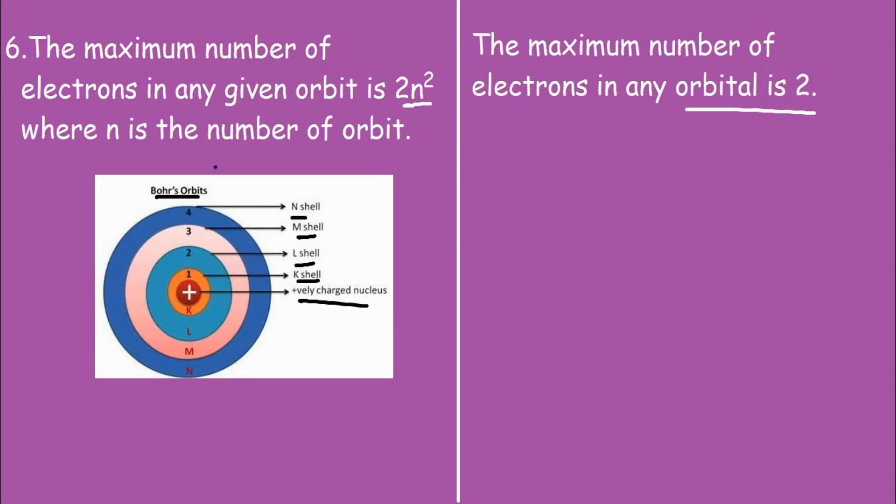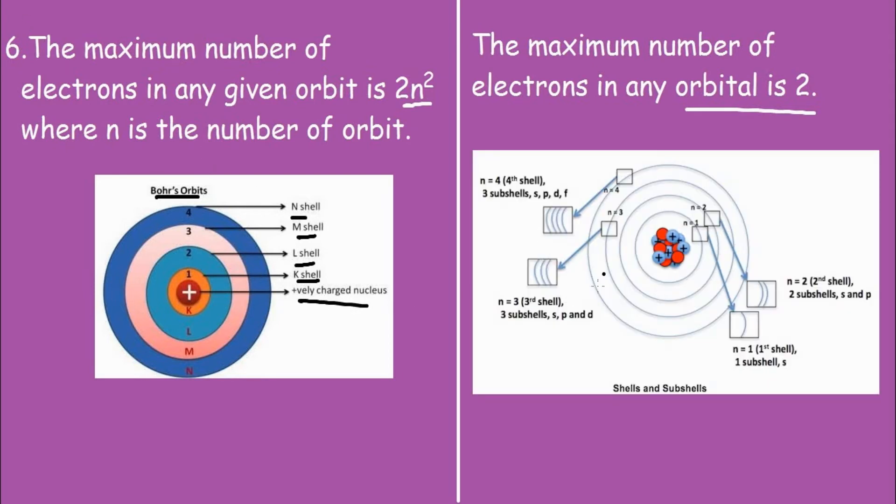Now for orbital, this is the orbital representation for each of this orbit. That is the K shell for n equals to 1, this can be further divided into s subshell. And similarly for n equals to 2, it has two subshells that is the s and the p. For n equals to 3, we have three subshells which are s, p, and d.